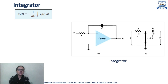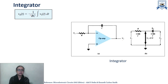The final expression shows that the output voltage is the integration of the input voltage with a factor of minus 1 by RC. Since we have applied the input at the inverting terminal, that is why we are getting a negative sign — it means the output will be phase shifted with respect to the input.